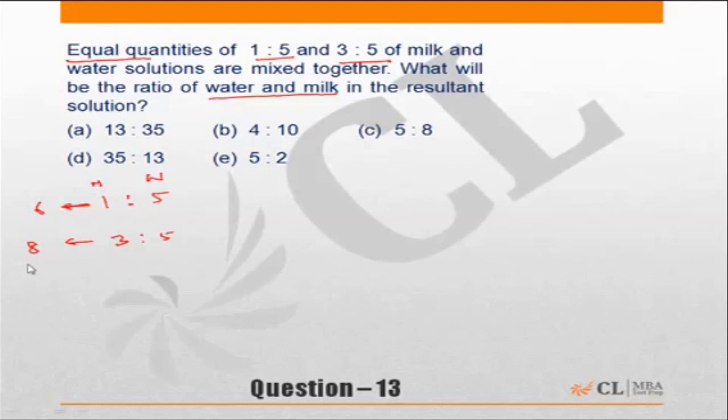So I will assume the total quantity of each of these is 24 liters. Why 24? Because 24 is the LCM of 8 and 6, and that will reduce my calculation effort significantly. So if the total quantity is 24 liters of each, in the first one what will be milk and water?